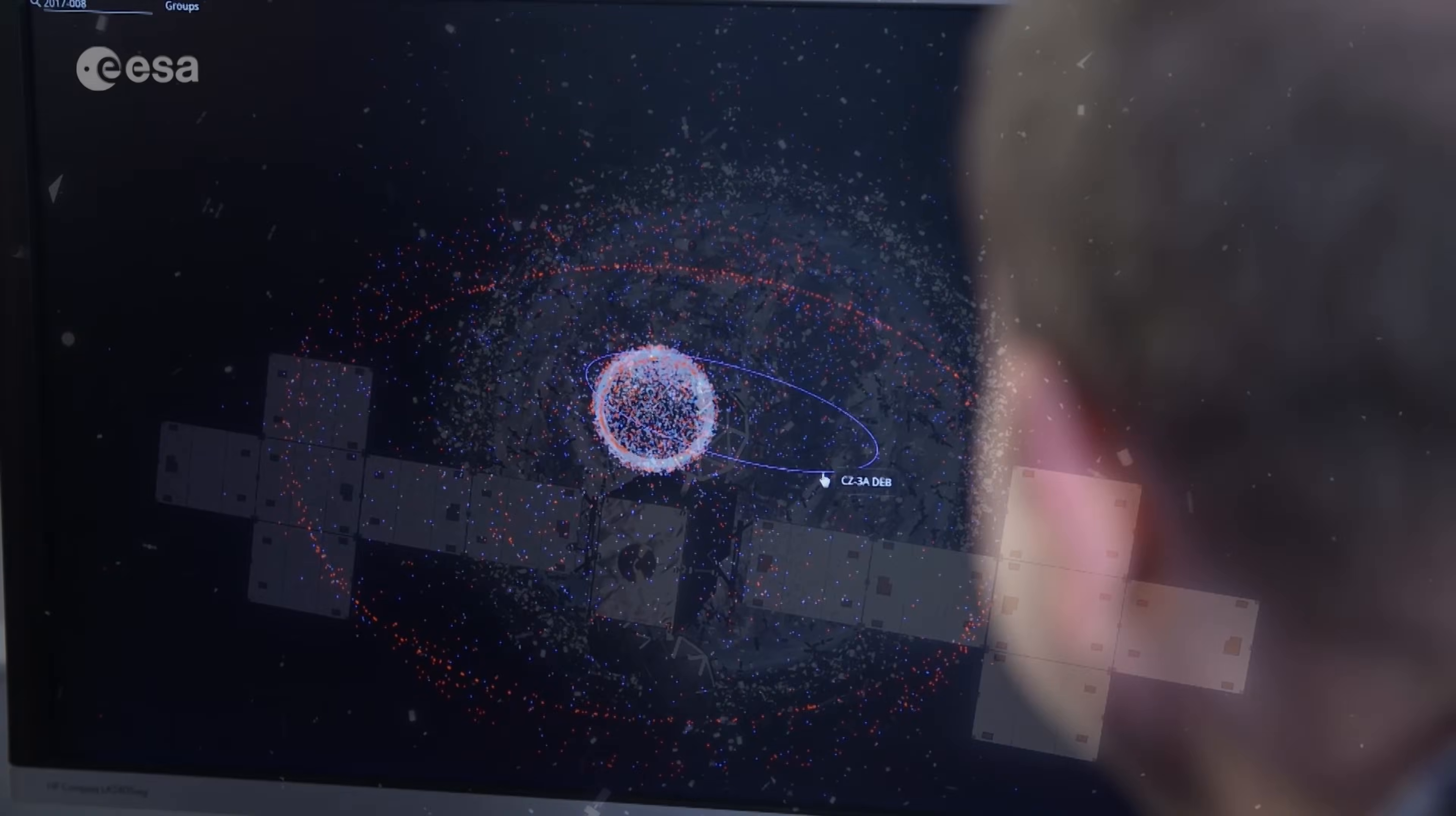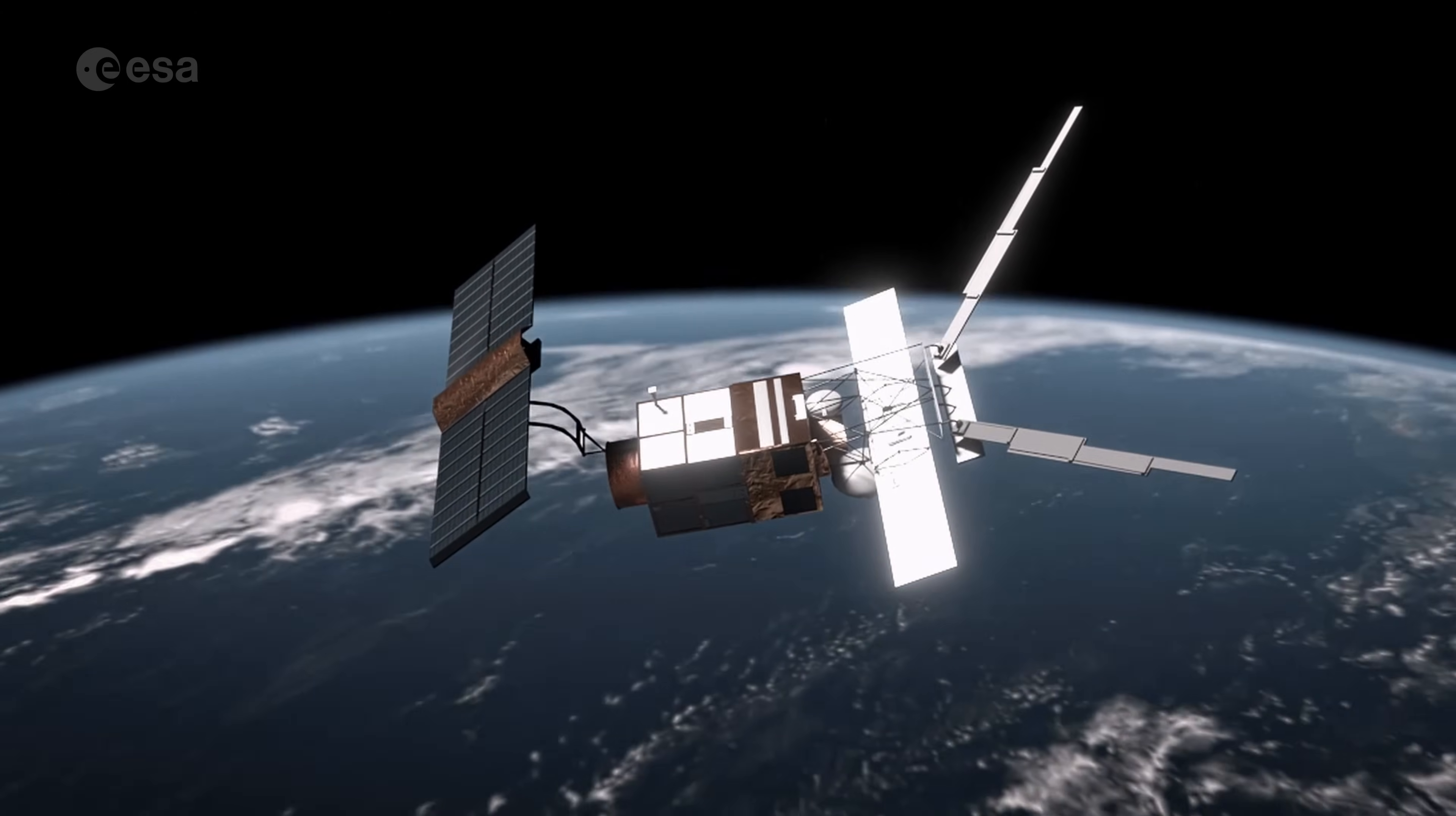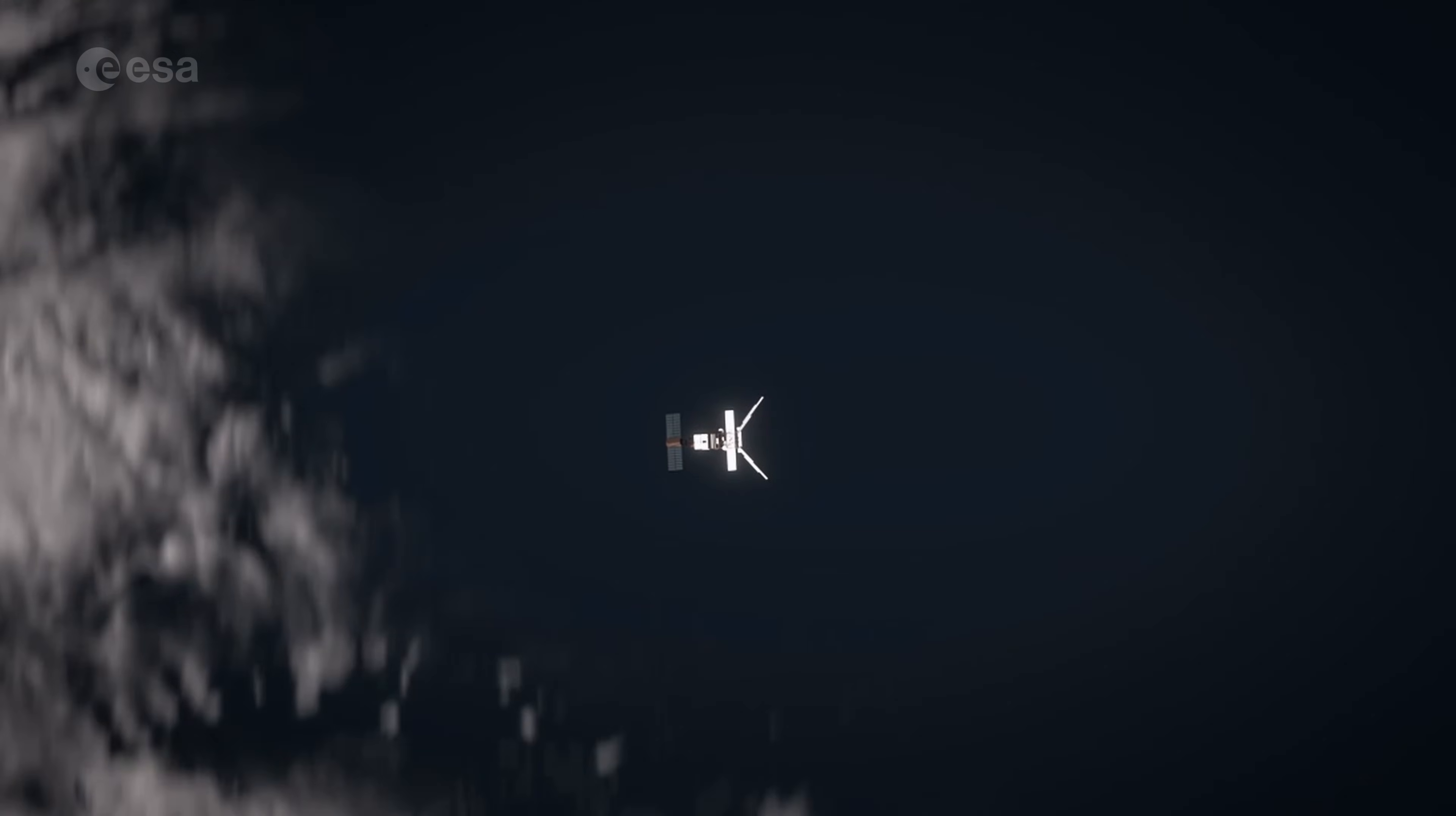We have long played a leading role in the implementation of space debris mitigation measures. In 2024, we de-orbited our ERS-2 satellite, reducing its orbital lifetime from 200 years to under 19 years.